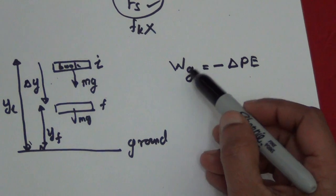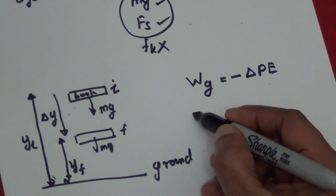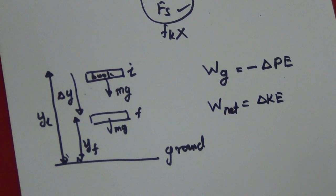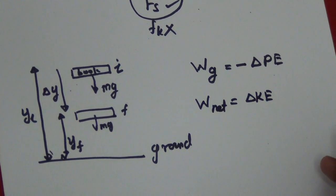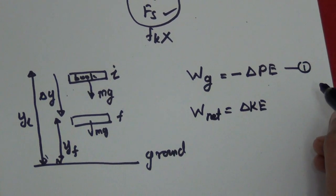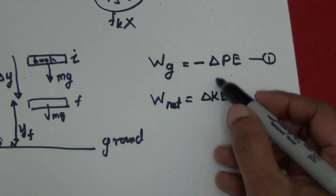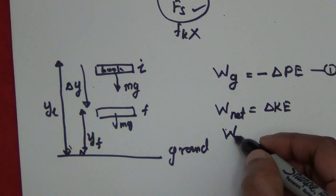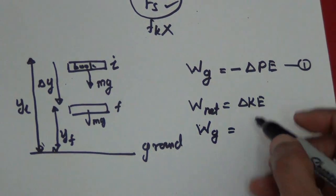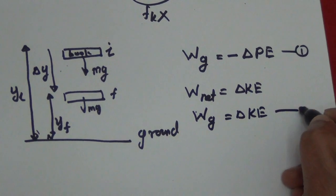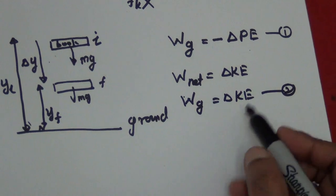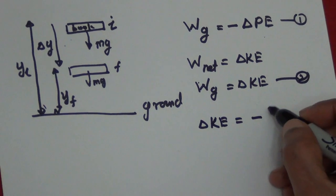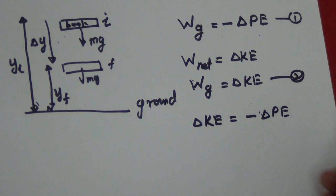The only conservative force here is gravity. We also learned about the work-kinetic energy theorem: W_net = ΔKE. Since the only force acting is gravity, W_g = ΔKE. From these two equations, I can write that the change in kinetic energy equals negative change in potential energy.